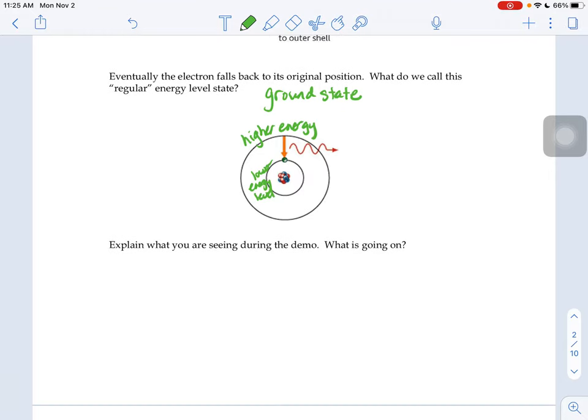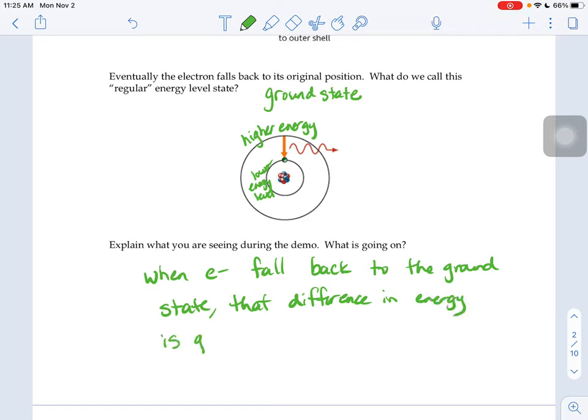What you're going to see is when the electrons fall back to the ground state, that difference in energy is given off in the form of light. You're going to watch a couple of videos of various gases and what their color patterns look like. Go check out those videos and then come back and we'll keep working on the notes.